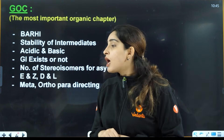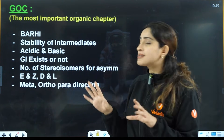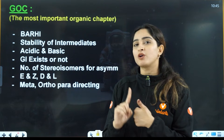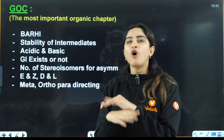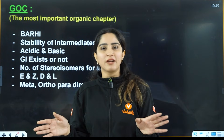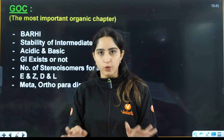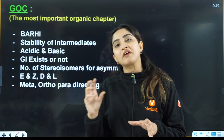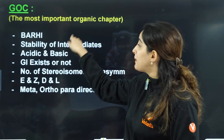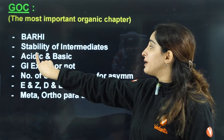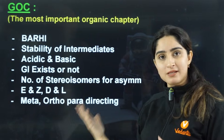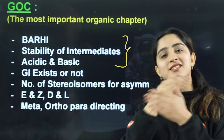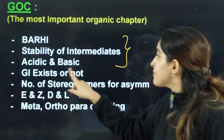Now let's talk about the GOC topics: backbonding, aromaticity, resonance, hyperconjugation, and inductive effect. Just learning definitions won't work. You should know how to apply these in stability of intermediates, and how to apply stability of intermediates in acidic and basic strength. These three topics are interrelated — it's actually one topic only.